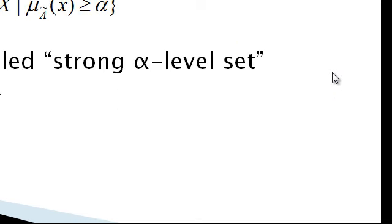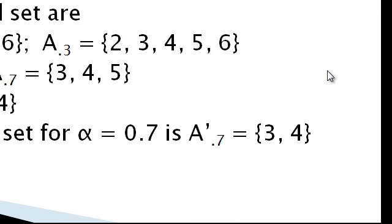Next, basic definitions of fuzzy sets. The alpha level set: we can defuzzify a fuzzy set into a crisp set by using the alpha level set. The alpha cut of A is defined as {X belongs to A such that mu_A of X is greater than or equal to alpha}, called the alpha level set. The strong alpha level set is defined as {X belongs to A such that mu_A of X is strictly greater than alpha}.